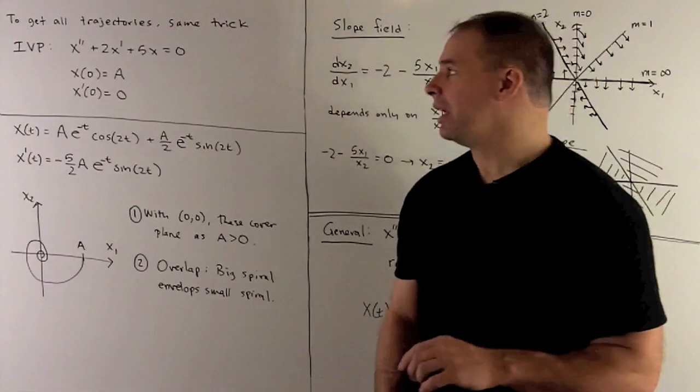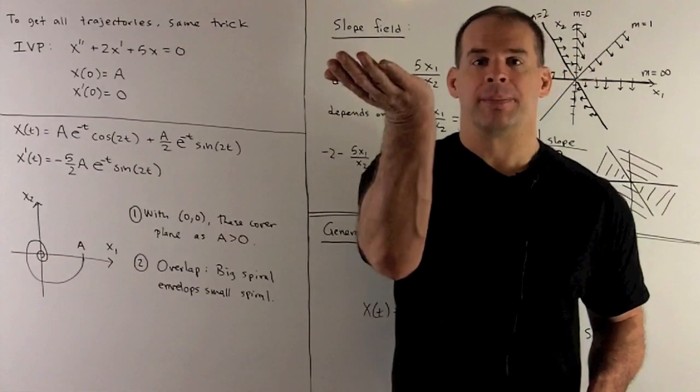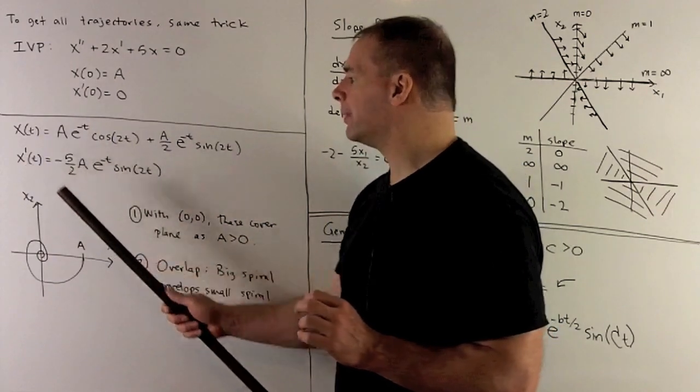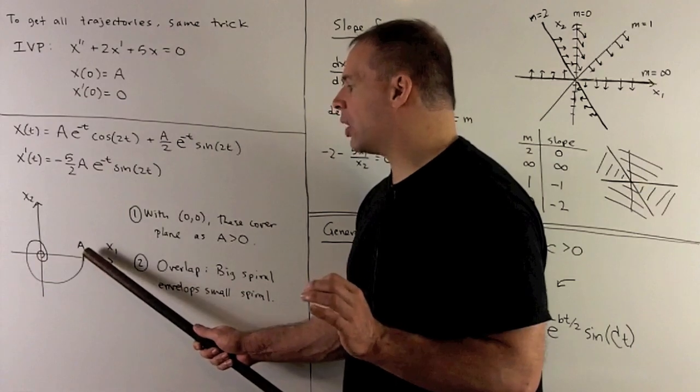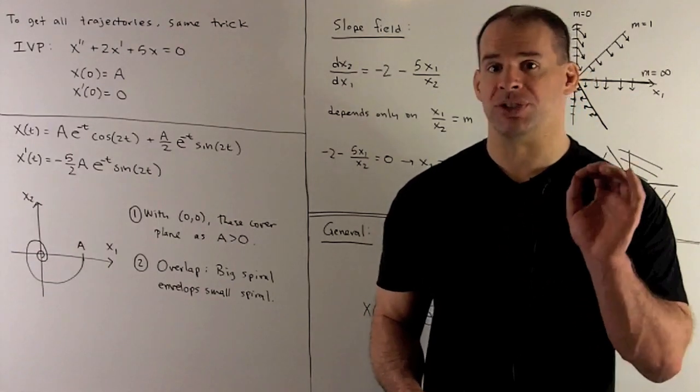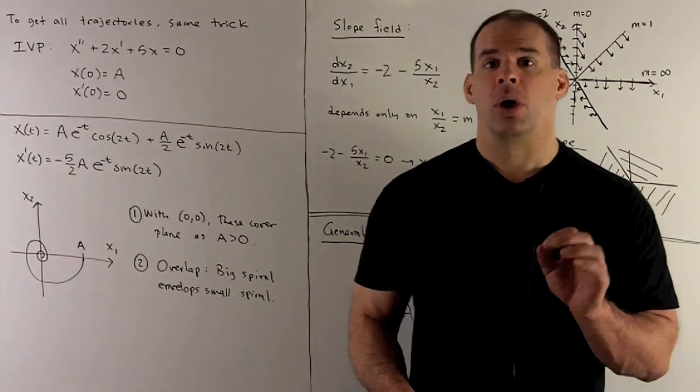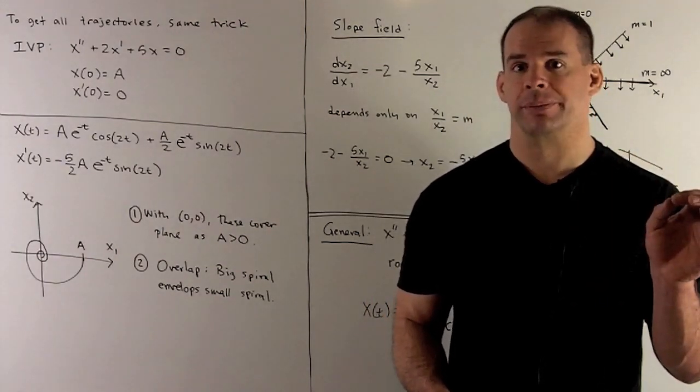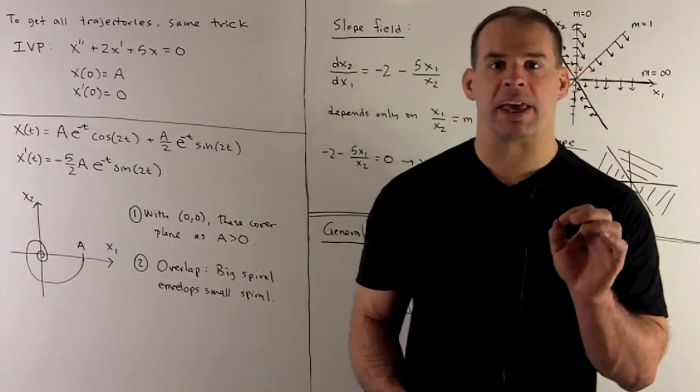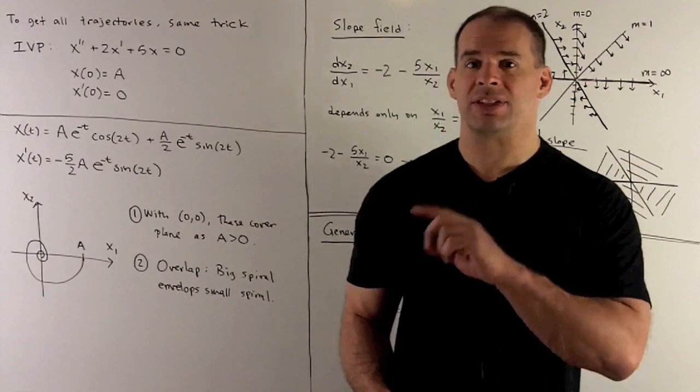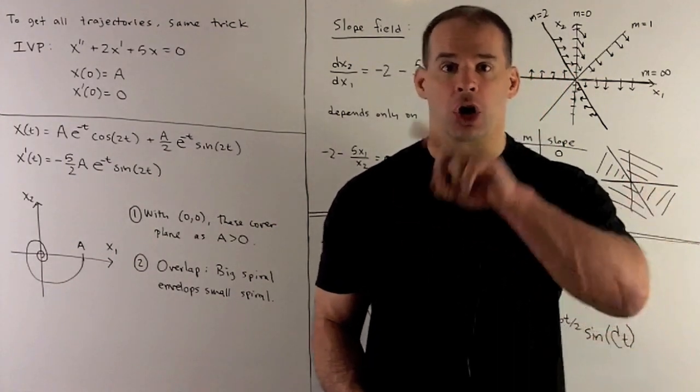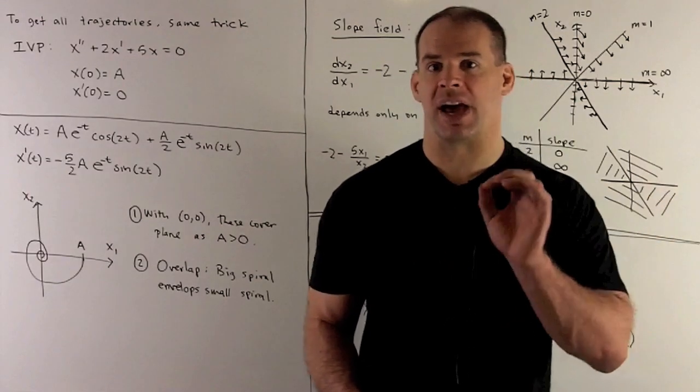Now, in this case, same idea. Instead of raising to height one, we're just going to raise up to height A. And then that's going to give us, okay, when we work it out, this will be our explicit solution for X and X prime. That's going to give us a spiral. It's going to start at A0 instead of 10. And then you note, as we let A range over all the positive numbers, those spirals and the point 00 cover the entire plane. So, we'll have all of our initial conditions covered if we time shift. Another thing to note, if we have any overlaps, okay, so note, in the free undamped case, we had ellipses. The ellipses didn't overlap. In this case, we'll have overlaps as we consider all positive A. But the only way we get overlap is if we have a trajectory sitting inside of a larger trajectory. So, it's going to be small spiral sitting inside of larger spiral.